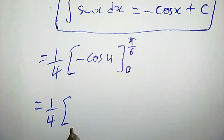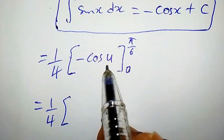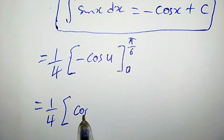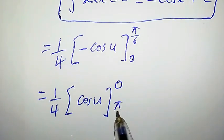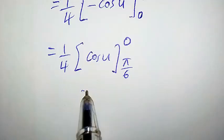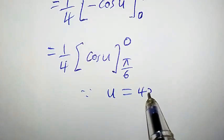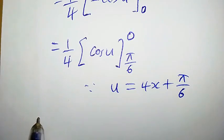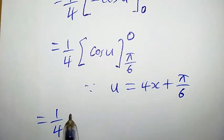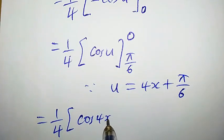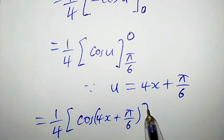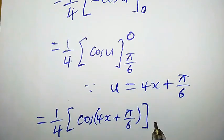Instead of writing −cos(u), we can write cos(u) and interchange the upper and lower limits, making the upper limit 0 and the lower limit π/6. Since u equals 4x + π/6, this becomes (1/4) times cos(4x + π/6) evaluated from π/6 to 0.